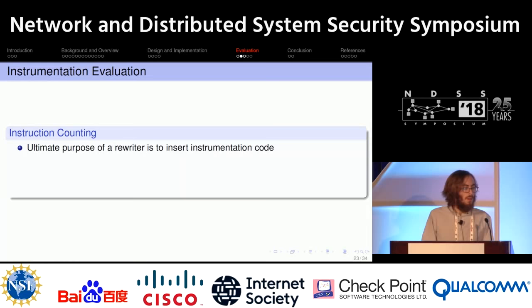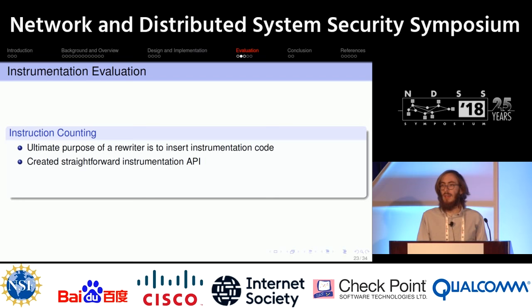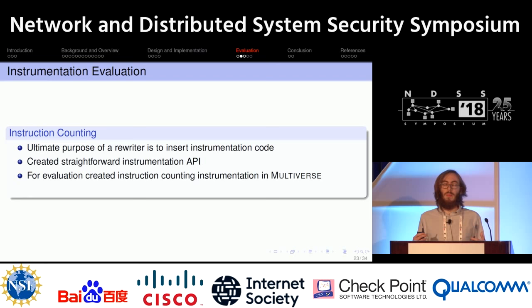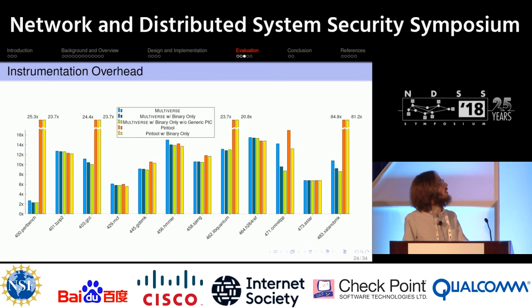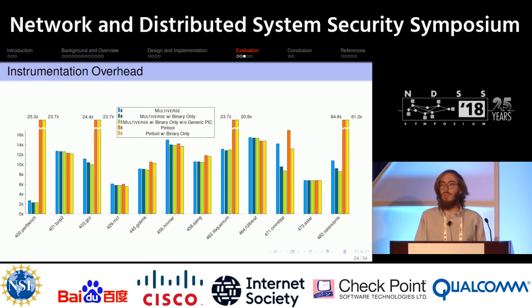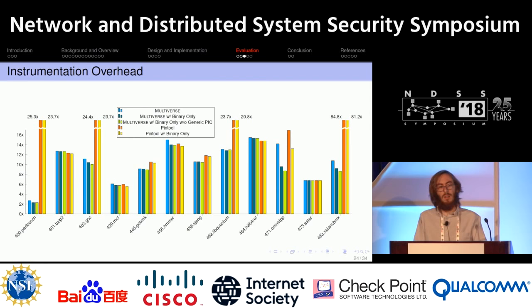A rewriter is not interesting if you can't insert your own code. We added a simple API to insert instrumentation assembly, and implemented a simple instruction counting instrumentation — inserting a counter incremented for each instruction — and compared it with an identical behavior Pin tool. The results may be surprising: for PerlBench, the overhead for Pin is 25 times, whereas it's just over two times for Multiverse. The reason is that if you instrument at the instruction level, Pin has hefty overhead because it's normally optimized for block-level instrumentation. At the instruction level, we actually outperform Pin here.